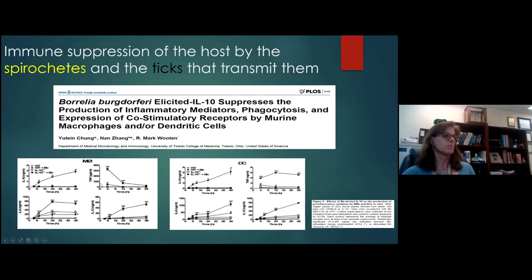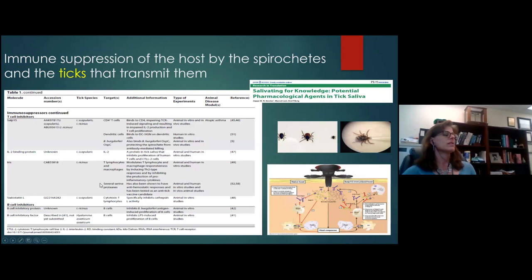Not only do the spirochetes engage in immune evasion and suppression, but the ticks that transmit them also help them evade the host immune response. There are a number of different tick proteins which have been shown to inhibit various facets of the immune response, including CD4 T cells, dendritic cells, macrophages, and even B cells.